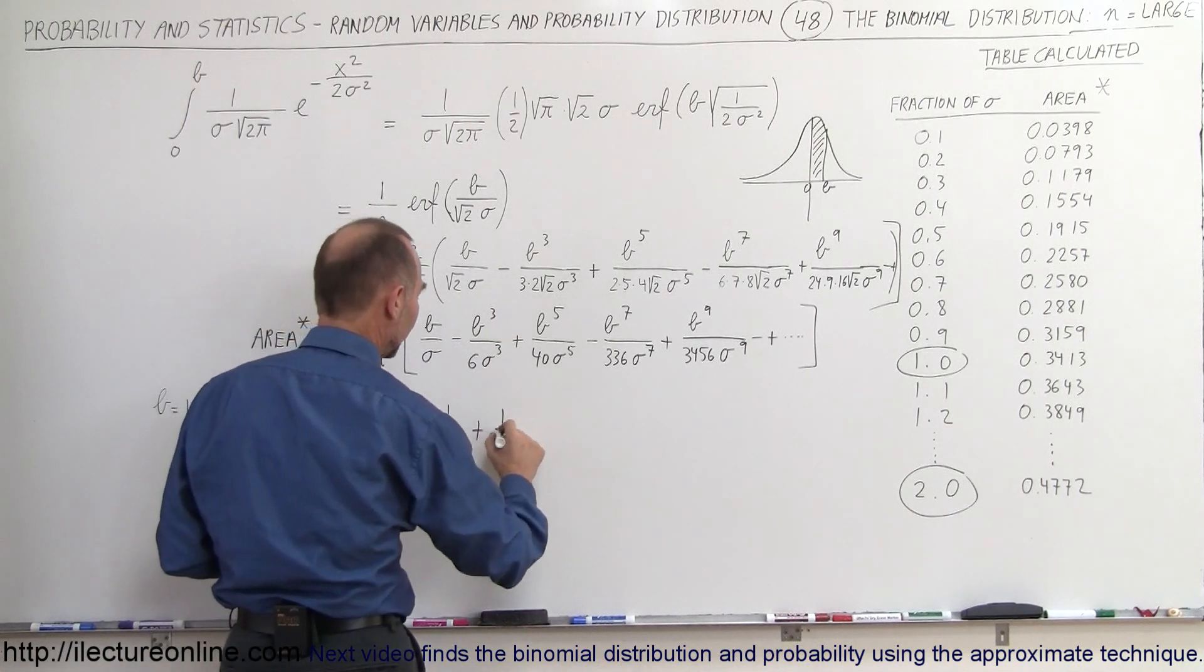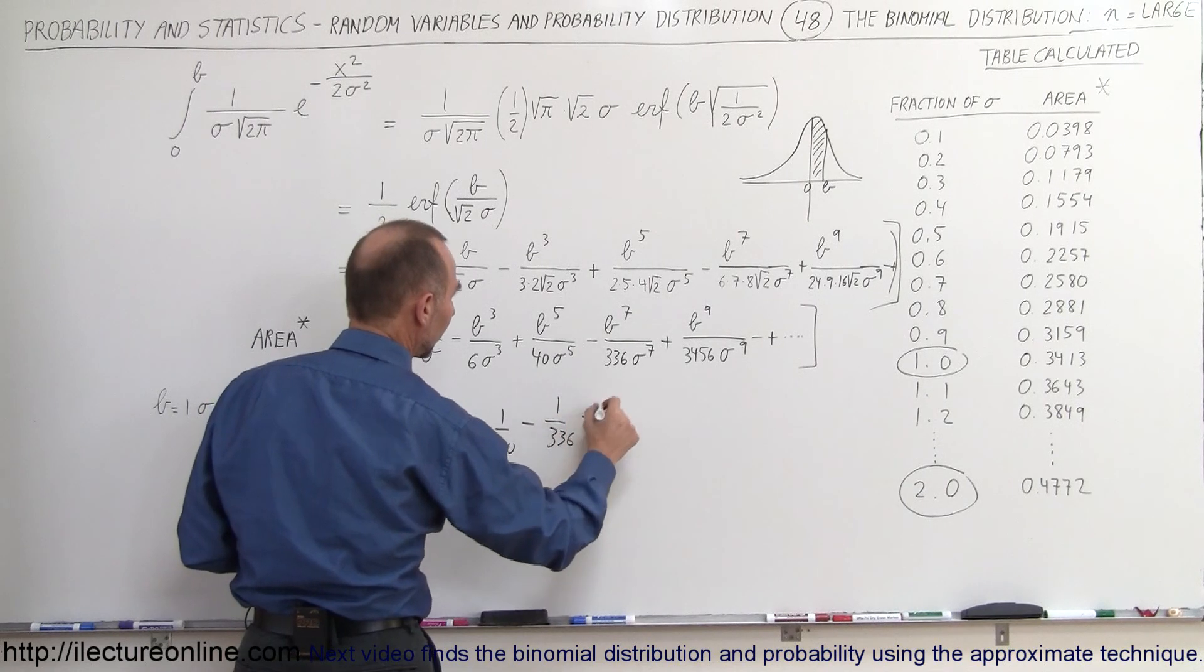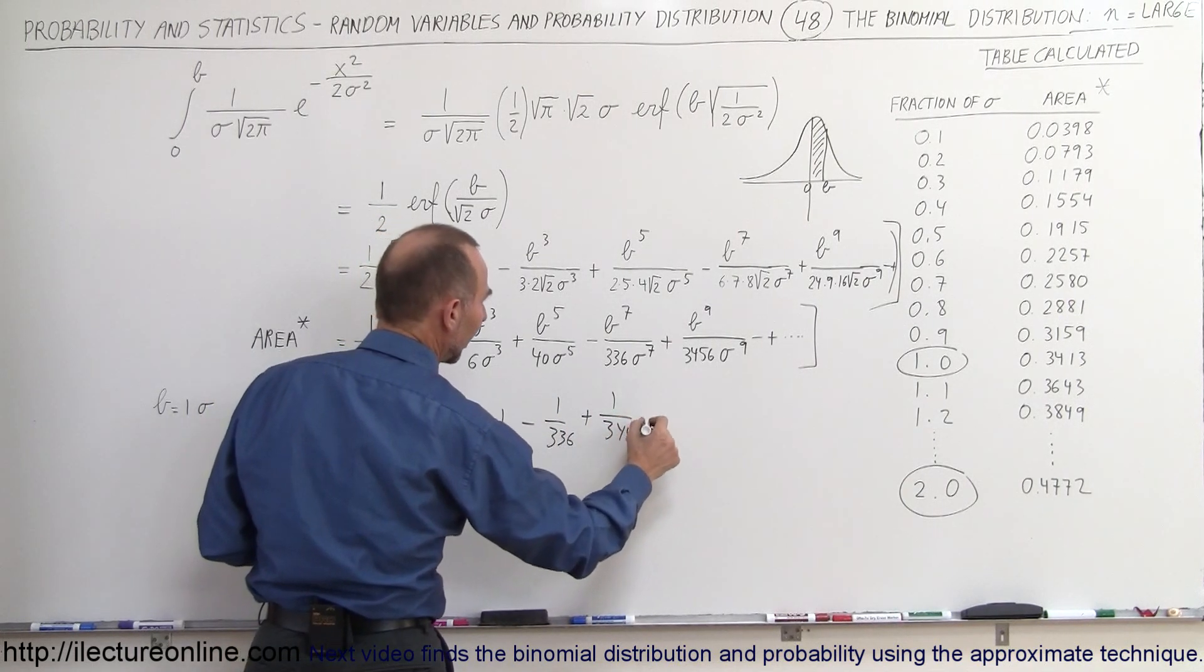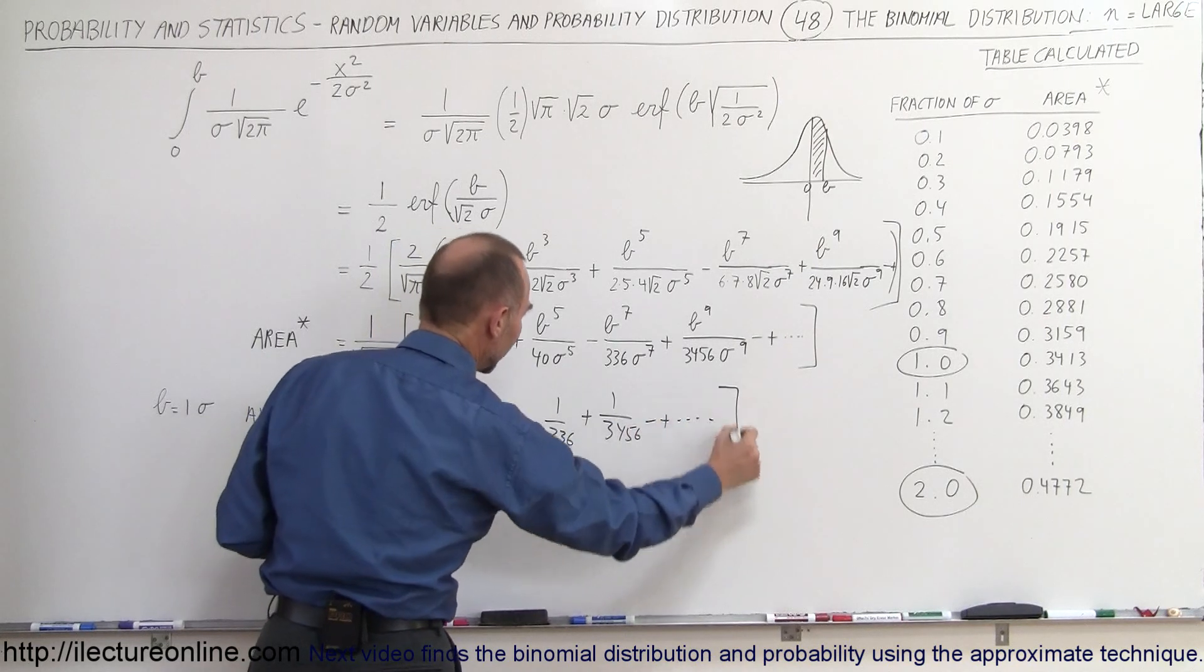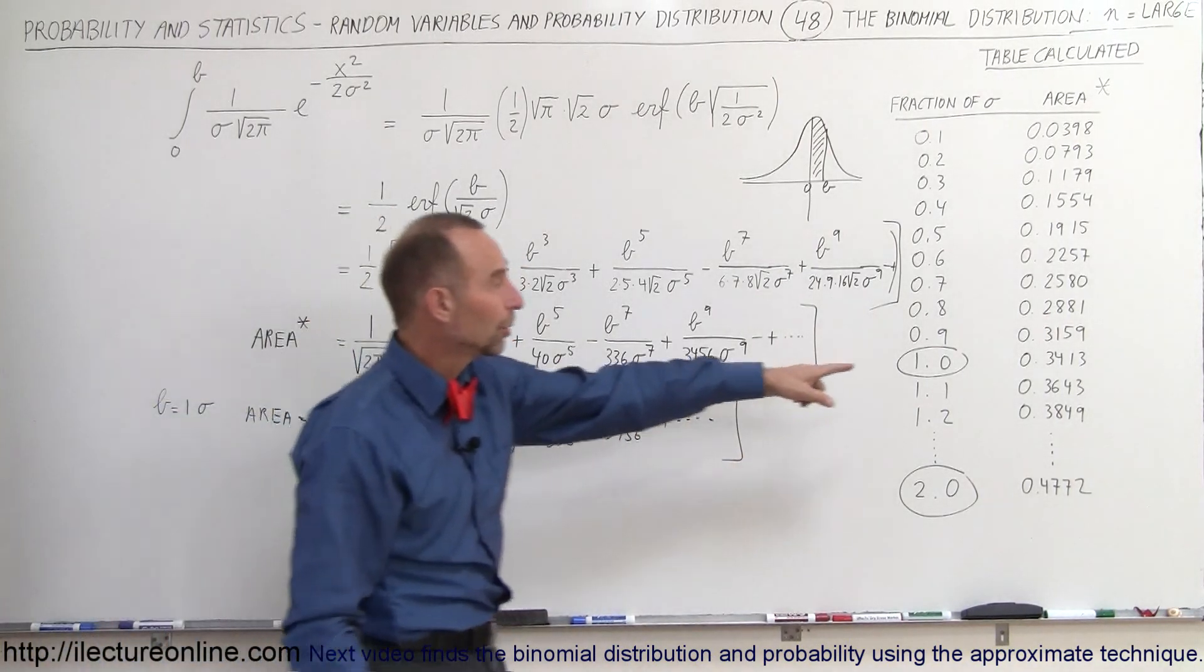That would be plus one over 40, that would be minus one over 336, and plus one over 3456, and of course that would go off indefinitely, but I think that's sufficient number of values to come up with a value that's pretty close to this number right here.